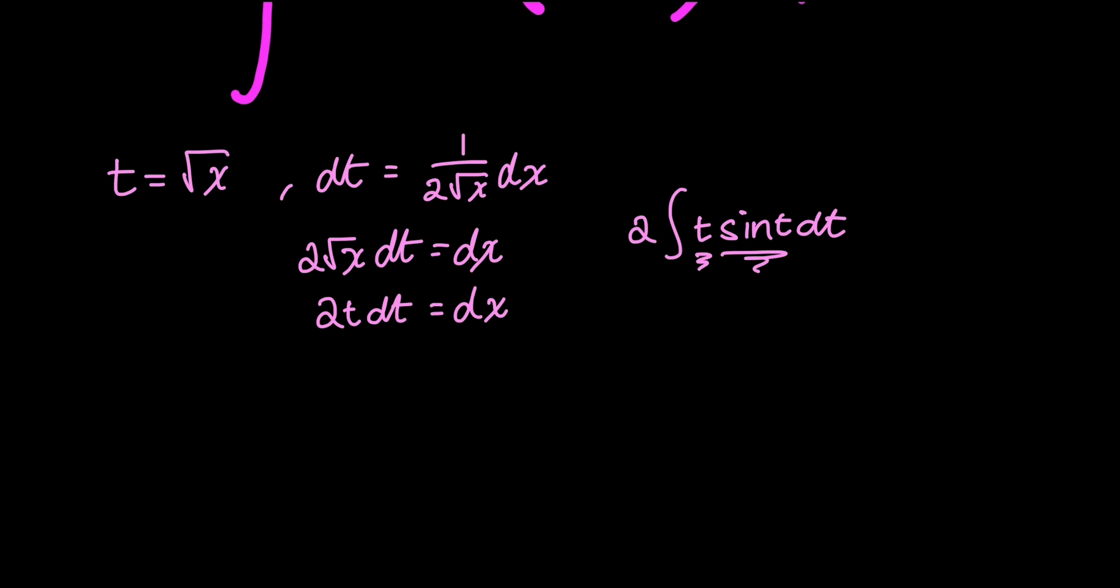For integration by parts, my integral is set up in 2 parts, u and dv. I have to make a choice of what is u and what is dv. In this case, u would be t, and dv would be equal to sine t dt.